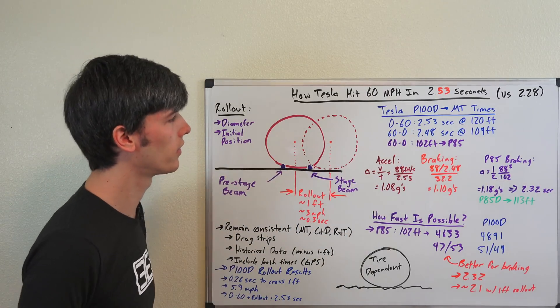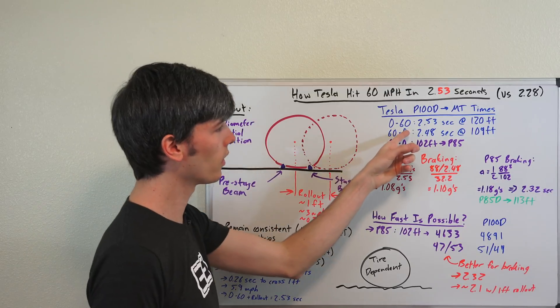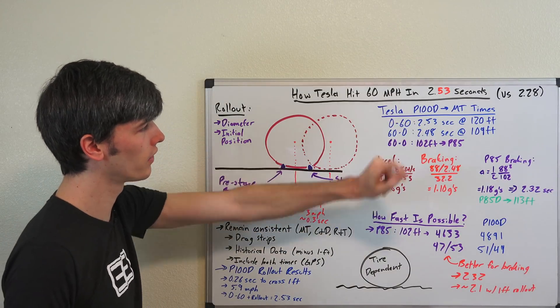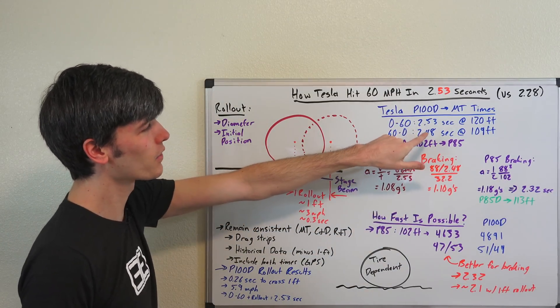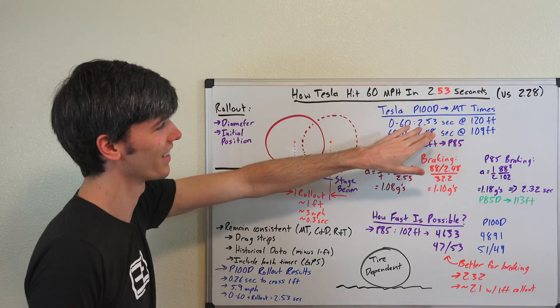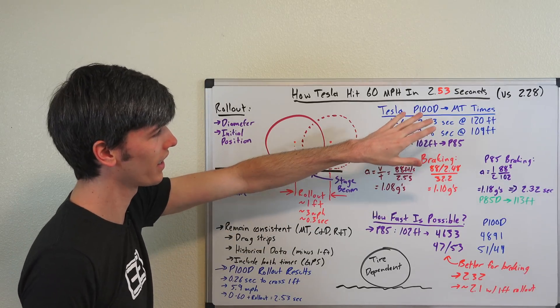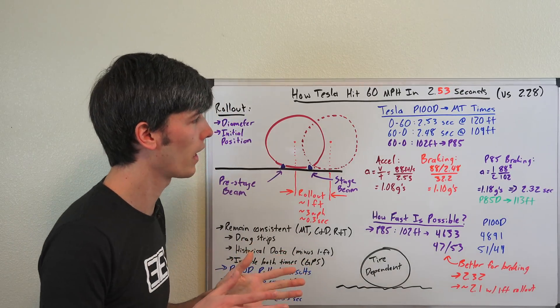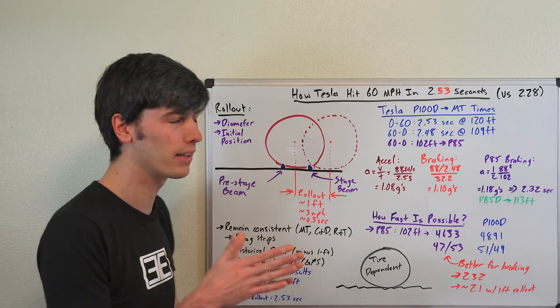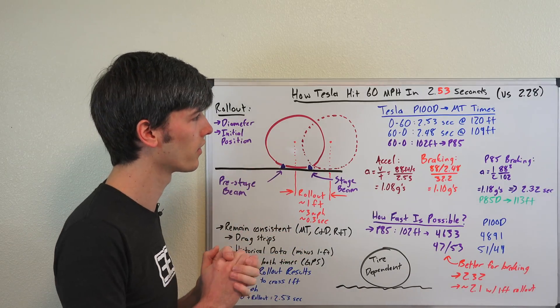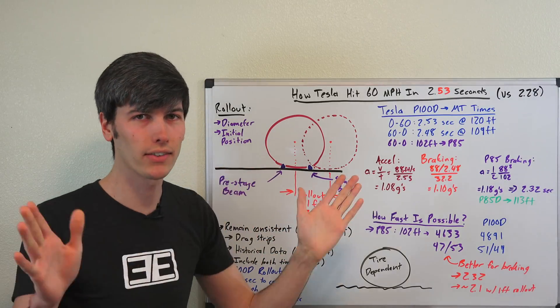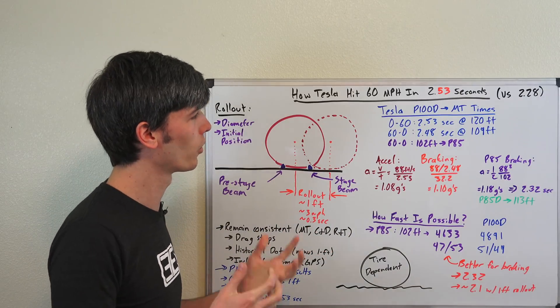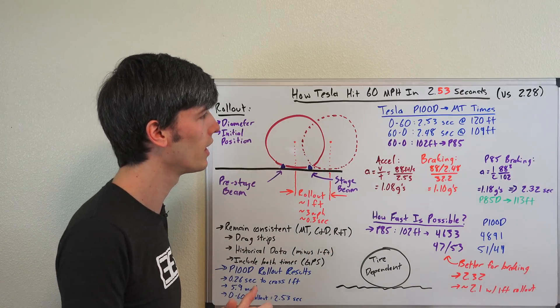Their stopping distance for this exact same car from 60 to 0 was 2.48 seconds. So if you look at that versus the 0 to 60, it's a difference of 1/20th of a second between accelerating and decelerating. So basically the car can accelerate just as fast as the car can stop, which basically does not happen. There aren't other cars out there that can do this.